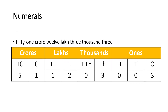Here is another example: 51 crore, 12 lakh, 3,003. I have written this in the Indian place value chart. Just put commas between the periods: 51, comma, 12, comma, 03, comma, 003. So now your number is 51,12,03,003, which is 51 crore, 12 lakh, 3,003.